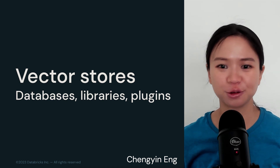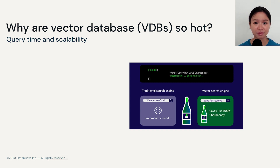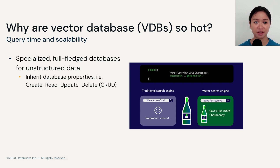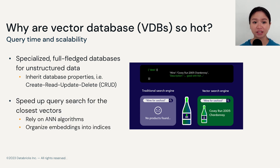But why do I care about vector stores? Why can't I just use a regular database to store vectors? Vector stores aren't actually too different from regular databases. A vector database is actually just like a regular database — it inherits full-fledged database properties like CRUD, which stands for Create, Read, Update, and Delete. But a vector database is specialized to store unstructured data as vectors. The differentiating capability of vector stores is providing search as a service — you don't have to implement your own search algorithm; vector stores provide search functionality for you out of the box.